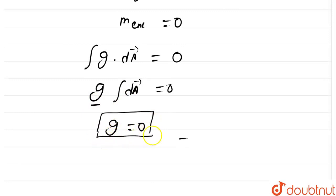So, the gravitational field intensity inside the shell, g is 0 inside the shell.